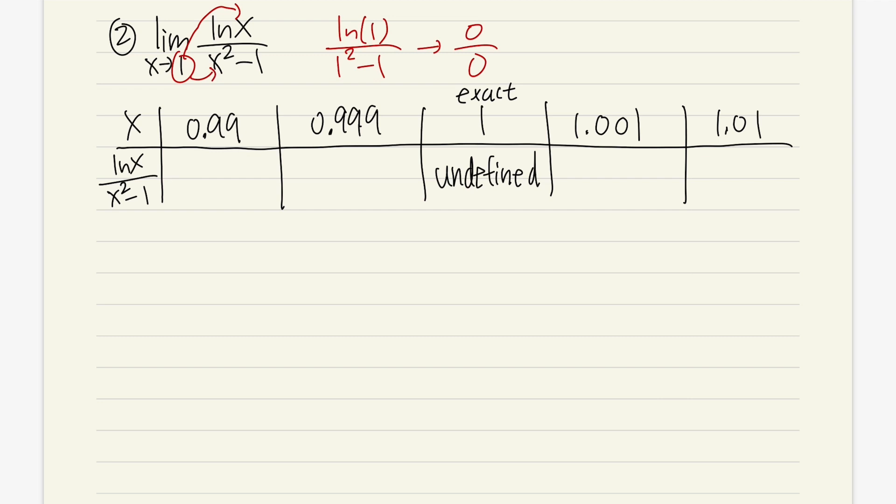And go ahead, just pause the video, use the calculator, enter all the values, and then fill in the table. Done? Okay, so right here I have 0.495 approximately speaking, and then for here we get 0.4995. Go to the other direction, here we have 0.505, and here we have 0.5005.